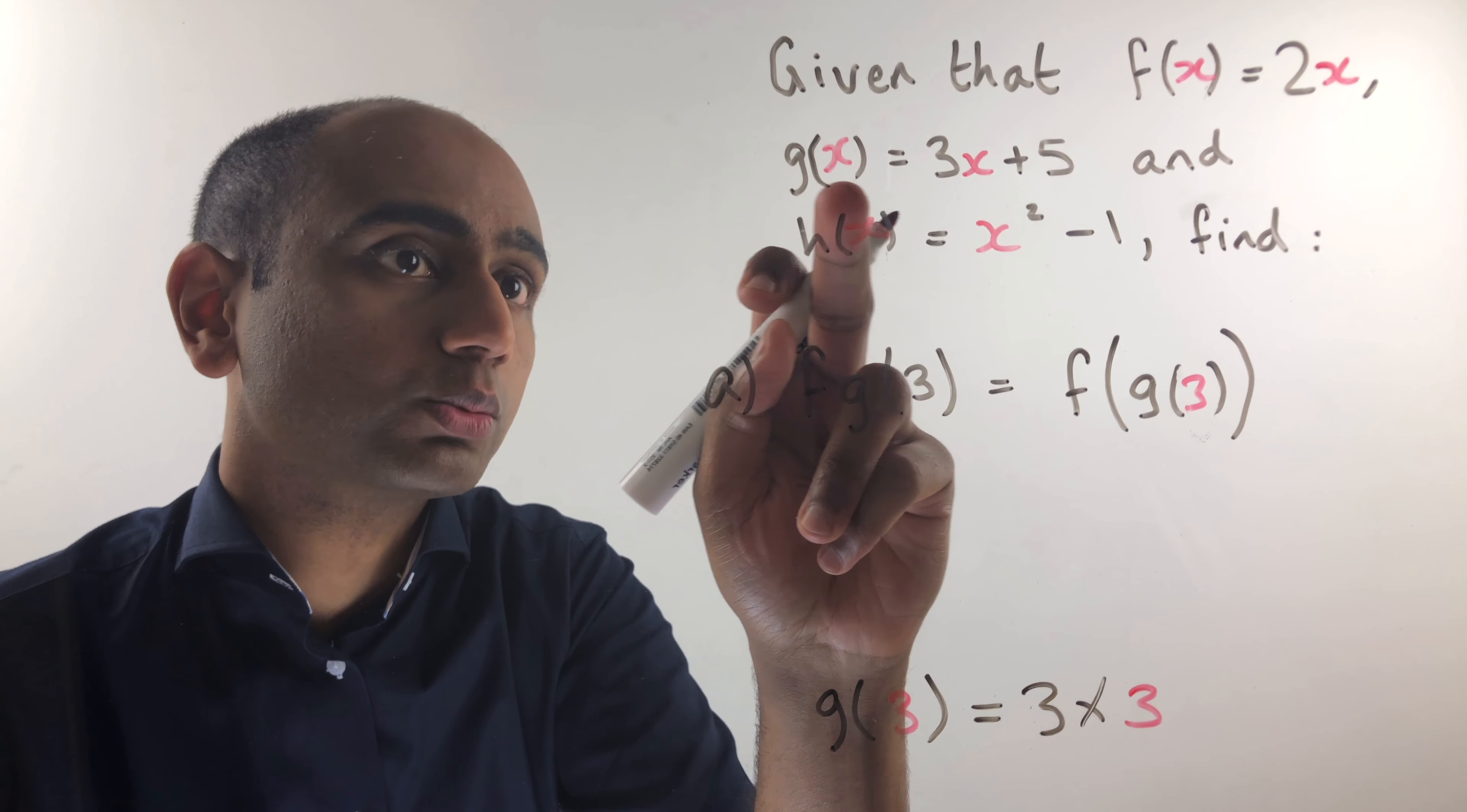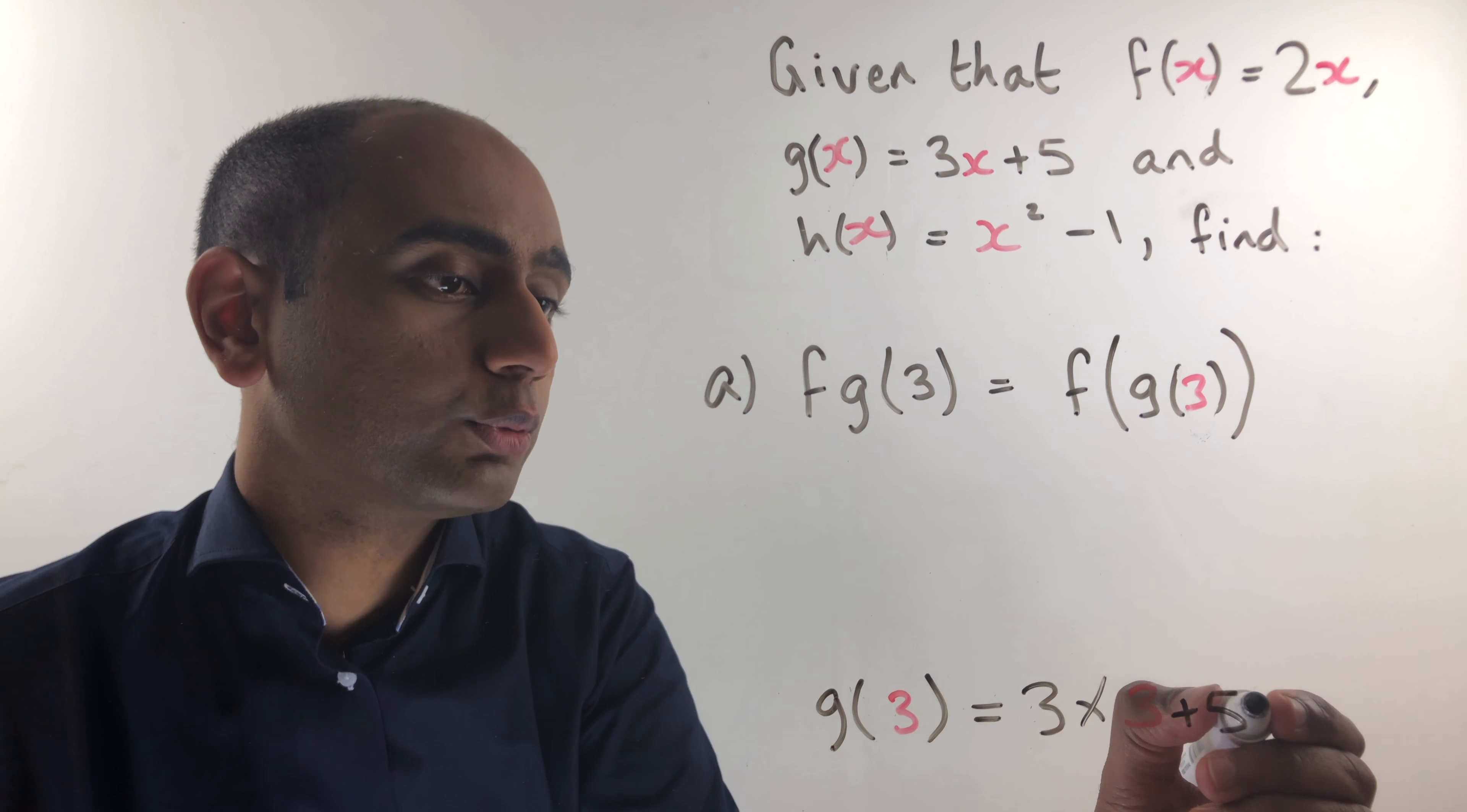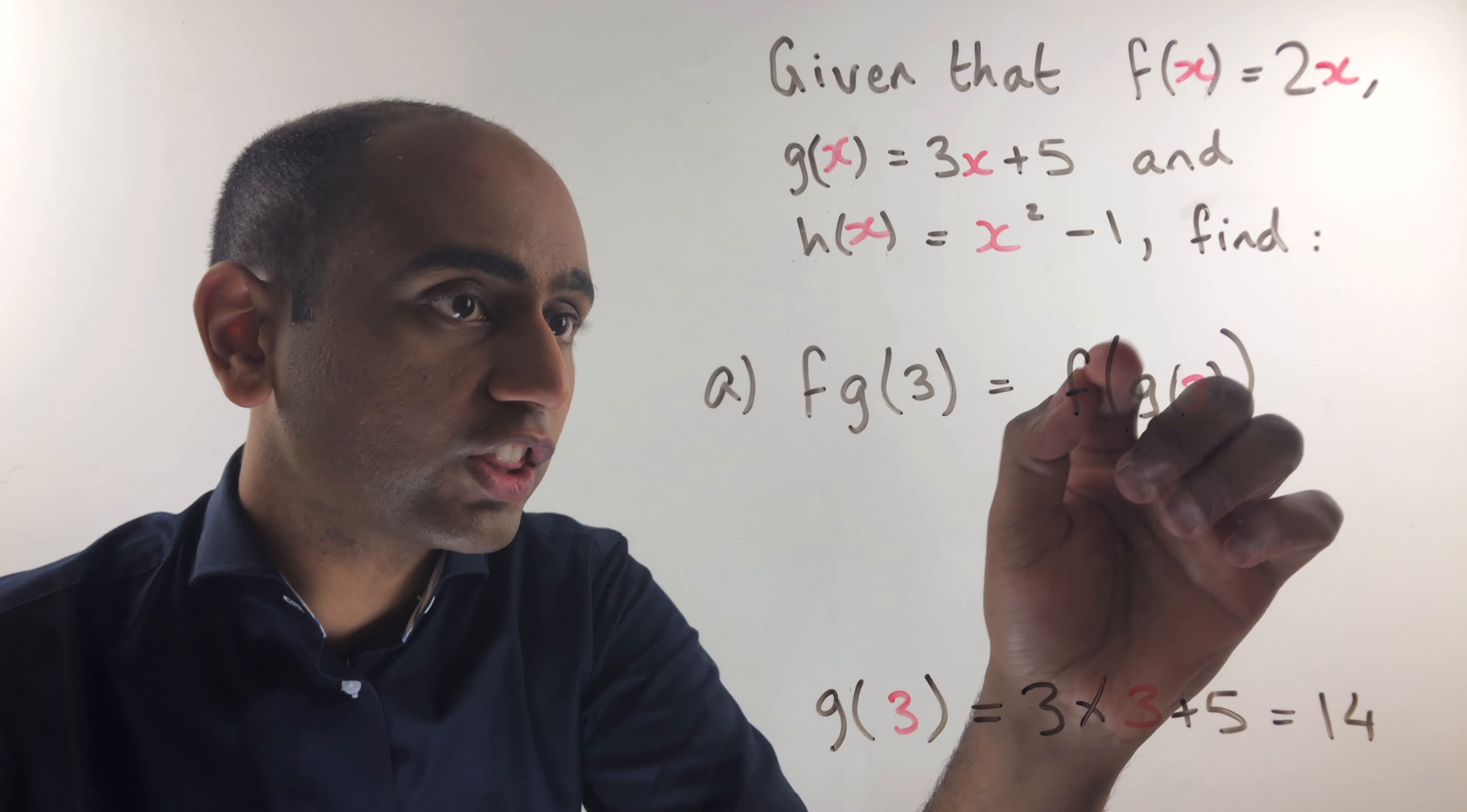And then we add 5 because g of x was 3x plus 5. Now 3 times 3 plus 5 is 9 plus 5 which is 14. So g of 3 is 14. That's this lot here.